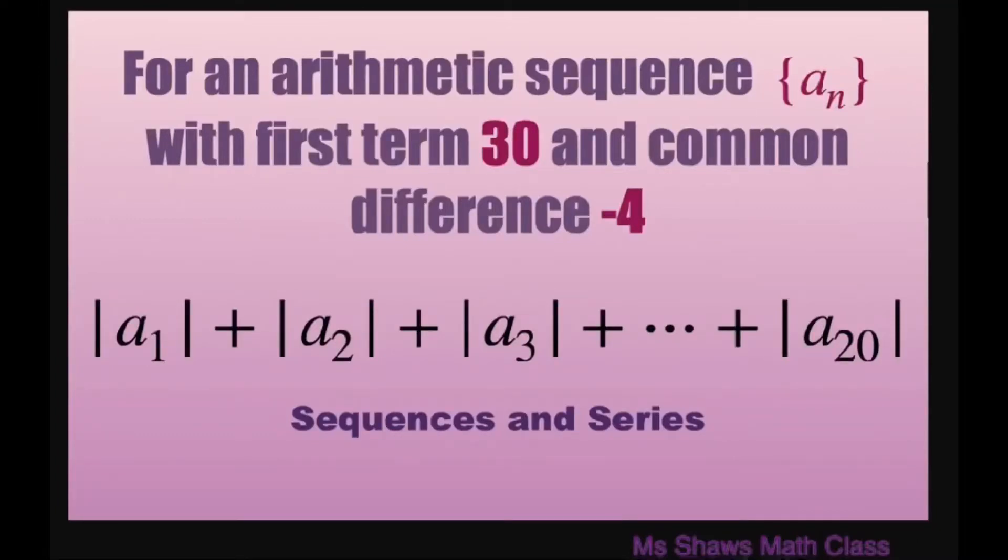Hi everyone! For an arithmetic sequence with first term 30 and common difference negative 4, we're going to find the sum of this arithmetic sequence.